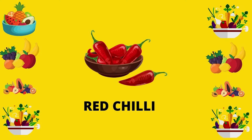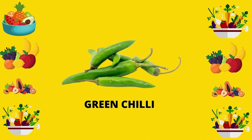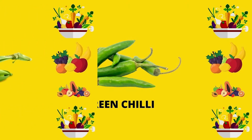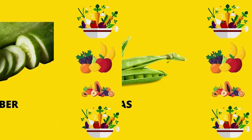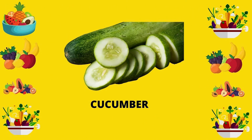Green chili — this is a green chili. Peas — this is peas. Cucumber — this is a cucumber.